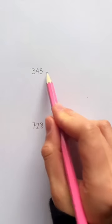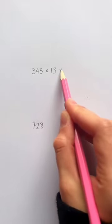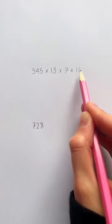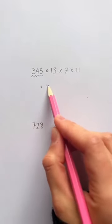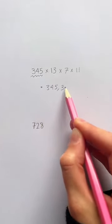If you take any three-digit number, then multiply it by 13, then 7, then 11, it'll always equal to these digits twice. So 345 becomes 345,345.